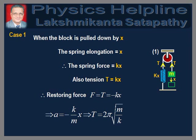In case 1, when the block is pulled down by x, the spring elongation is also equal to x. Therefore, the tension in the spring is equal to the spring force, which is equal to Kx. Therefore, restoring force is equal to minus Kx, since it acts in the opposite direction to displacement. Therefore, acceleration A is equal to minus K over m into x, which implies T is equal to 2π√(m/K).